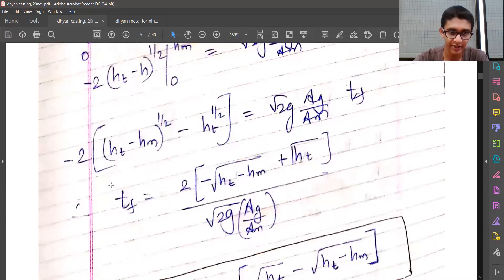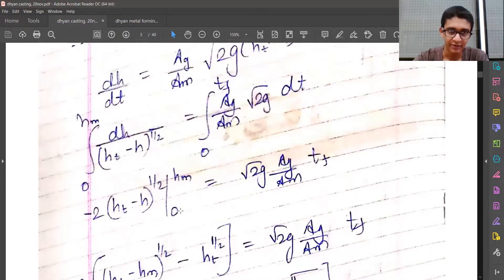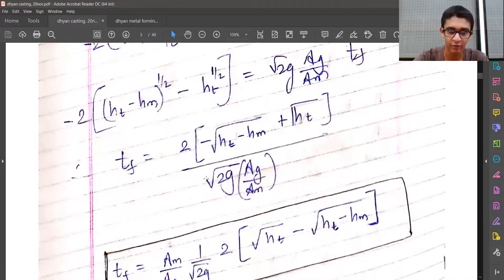Finally, we get tf, which appears because we pour the material from time zero to time tf—the mold filling time. The height changes from zero to the height of the mold. We can easily remember this; it may look complex, but it's not that tough.